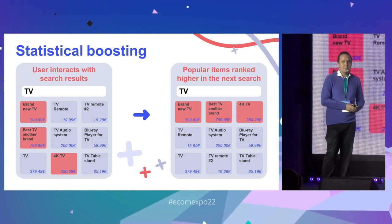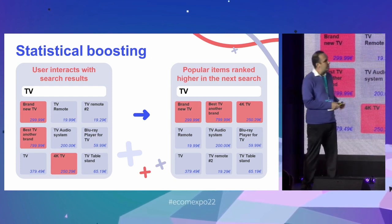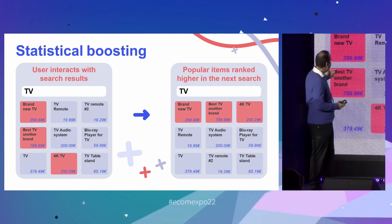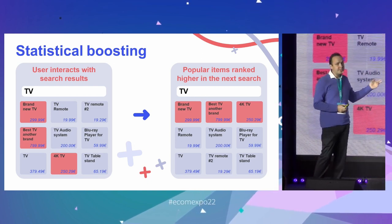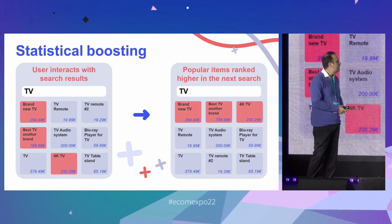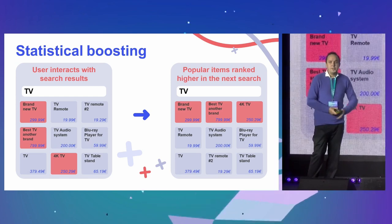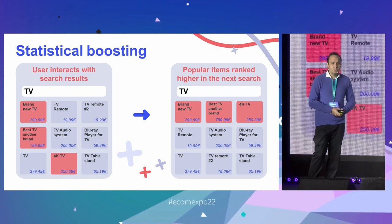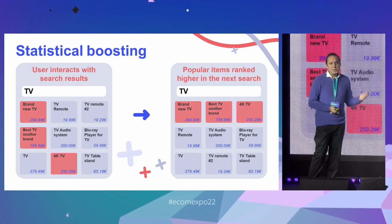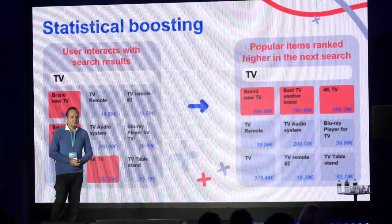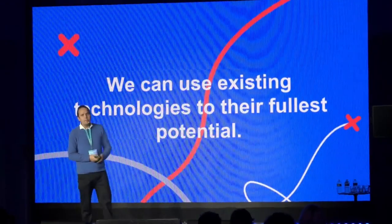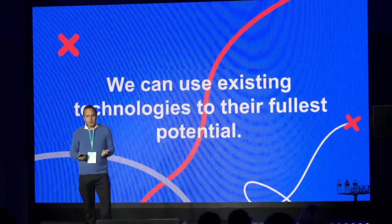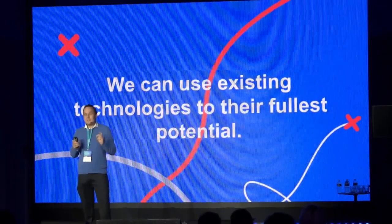Another popular technique is statistical boosting, where you track which products a user interacts with in search — whether they click, hover the mouse, or add an item to the cart — and then move those products to the top in the next search, for the same user or others. You really do not need complex AI to achieve that. By using existing technologies that are not AI, we can achieve pretty great results if we configure them and use them to their fullest potential.